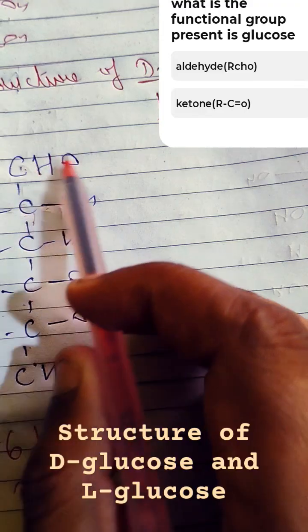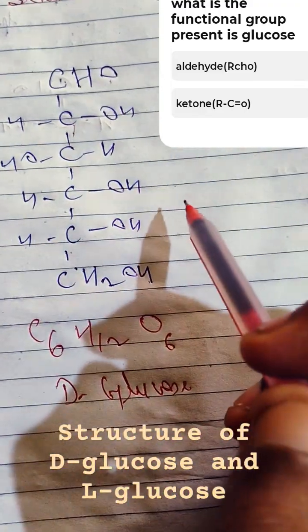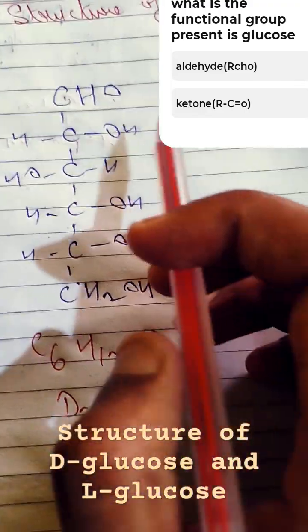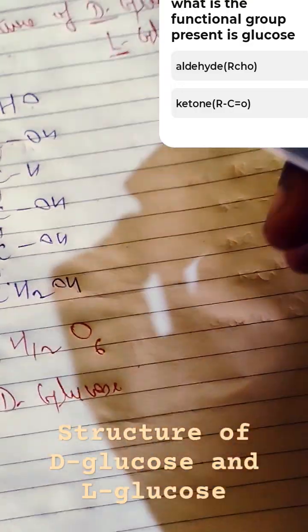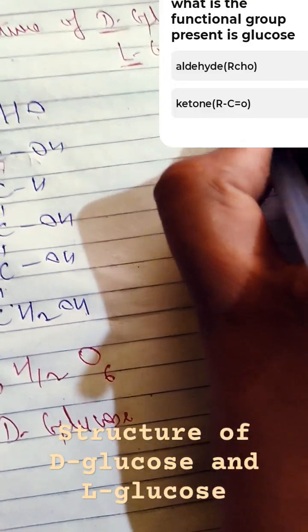Now what we will do, we will shuffle it. In L-glucose what we will do, we will shuffle it. So what will be the structure? First of all, we have to make the functional group the same, that is CHO.